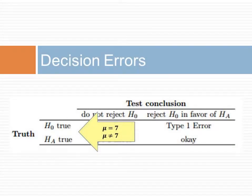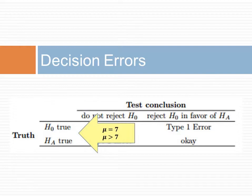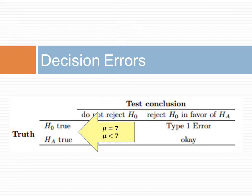We will find it most useful if we always list the null hypothesis as an equality. To show the hypothesized mean of the population, we use the Greek letter mu and write the null hypothesis as mu equals 7 in this case. The alternative hypothesis always uses an inequality — for example, mu is not equal to 7, or mu is greater than 7, or mu is less than 7.